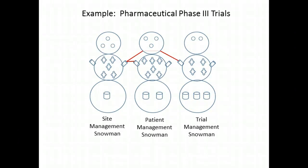Snowmen work together through asynchronous messages to coordinate business activity. Consider a pharmaceutical company running phase three trials. They might have one snowman that manages patient information, another responsible for managing a particular study site, and another responsible for managing information about the trial as a whole. The actual snowmen will be determined by the synergy analysis of the functions in the business architecture.